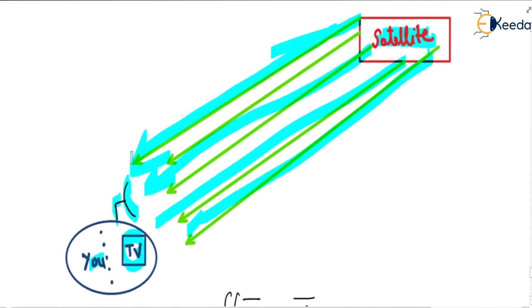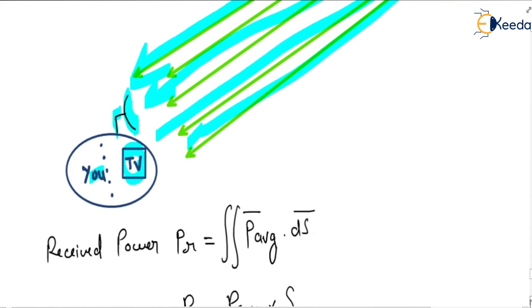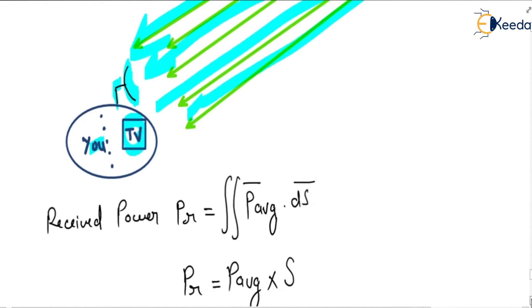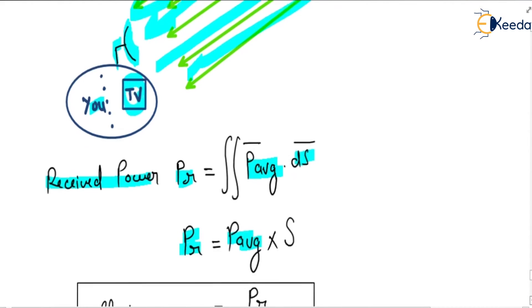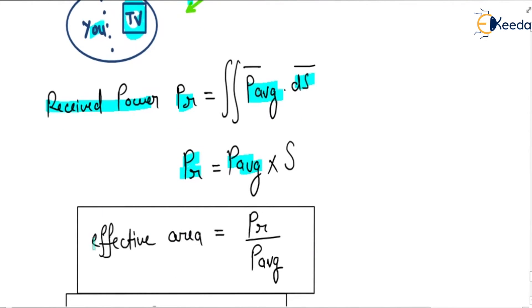It depends on the area how much power is being received. Received power is directly proportional to the effective area of the receiver. So received power PR equals P average times dS. PR = P_avg × S, where S is the effective area.